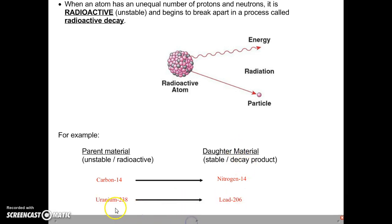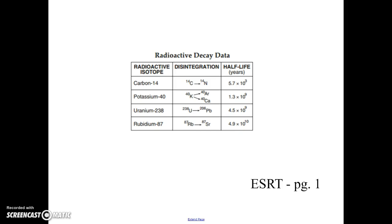Another example, there is a radioactive element called uranium-238. It decays into lead-206, which is stable. On the front page of your earth science reference table, you have this chart that shows you radioactive decay data. And it gives you four different isotopes, which are radioactive. It shows you what they disintegrate or decay into. And then they give you something called the half-life, which we will look at in a minute.